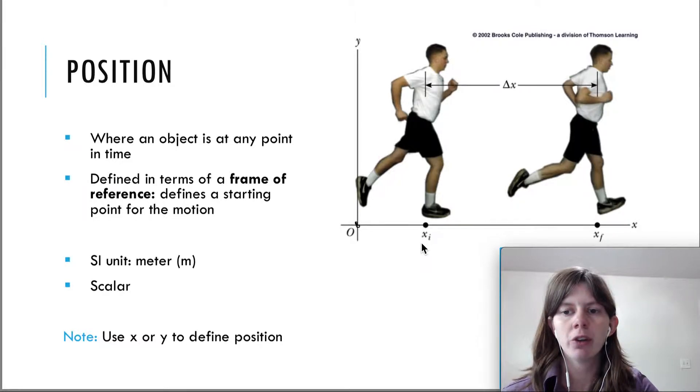So just also in this picture, you see xi and you see xf here. So we're using the x for the position. The i stands for initial and the f stands for final. So that means your initial and final positions here.